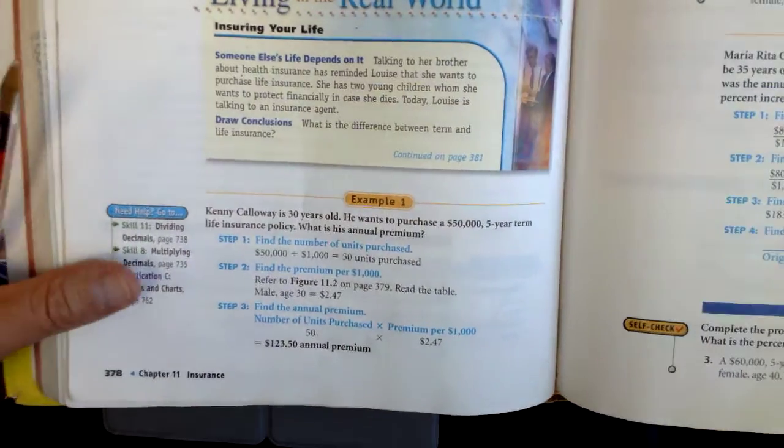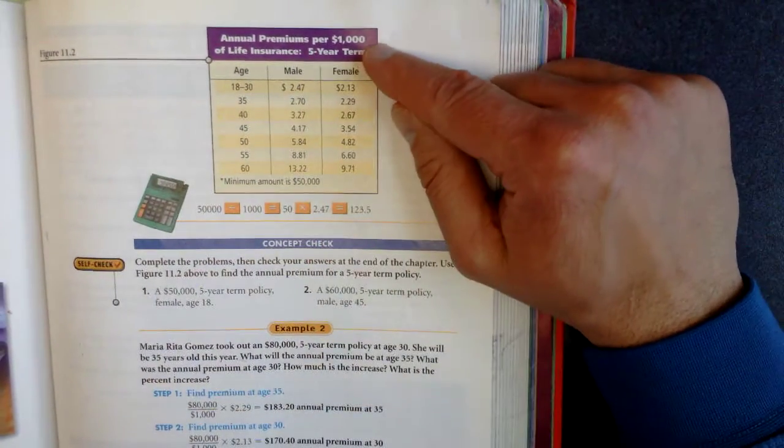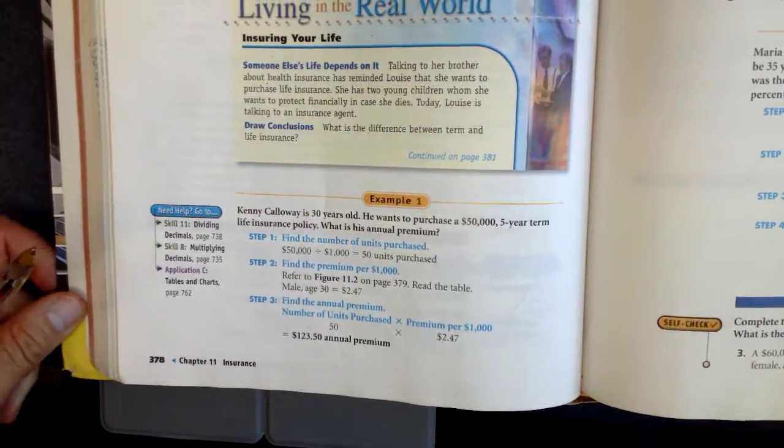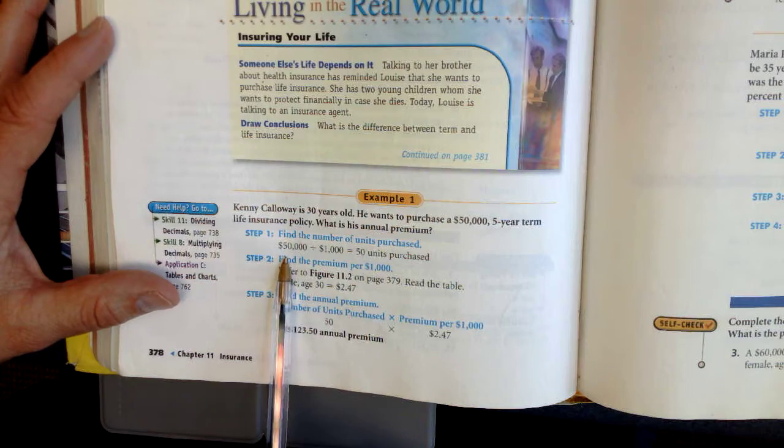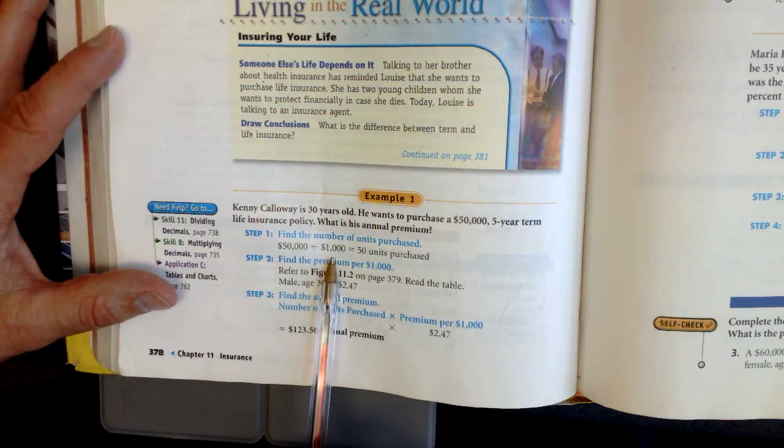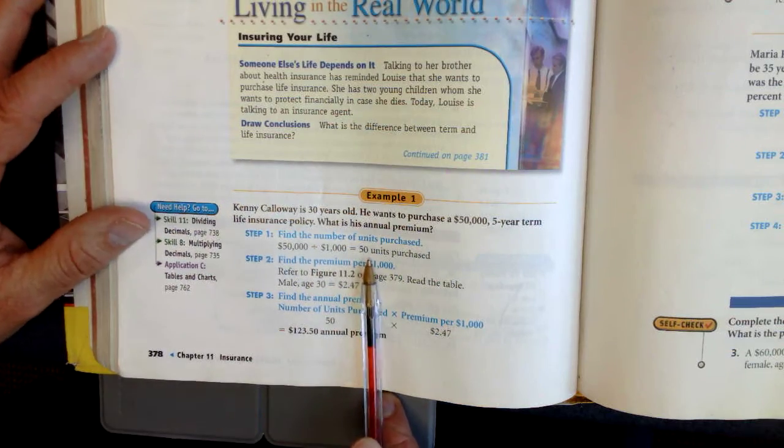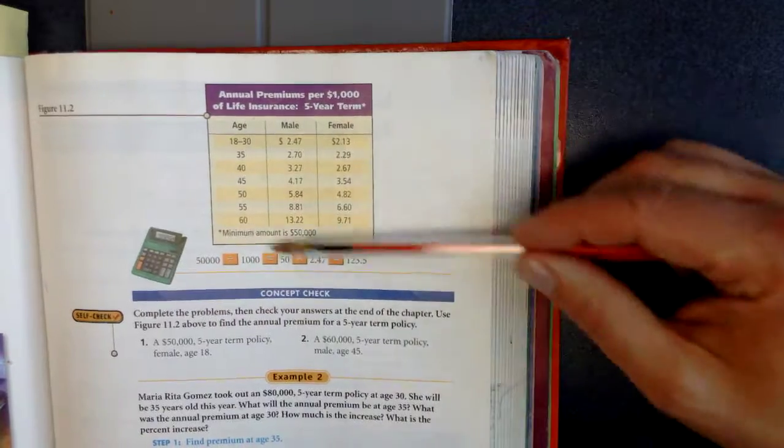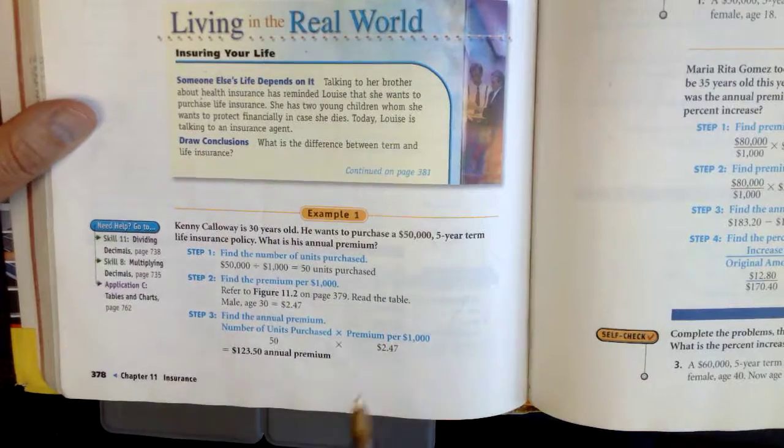If you remember from the chart, this chart we have here is a life insurance chart per $1,000. So the first thing we're gonna do is take his $50,000 and split it up into thousands. We're gonna divide that up by a thousand. When you do that, that means he's purchasing 50 units of this life insurance. That's your first step.